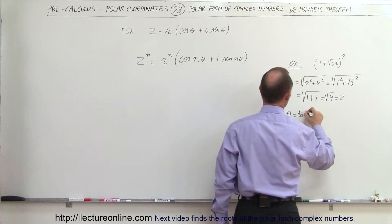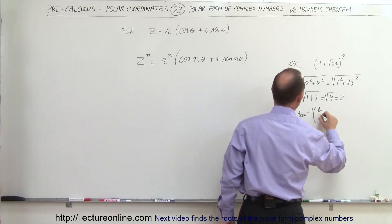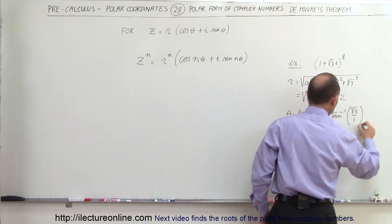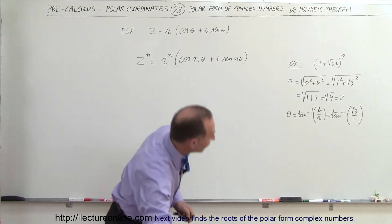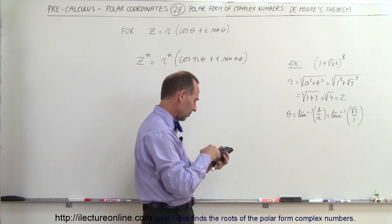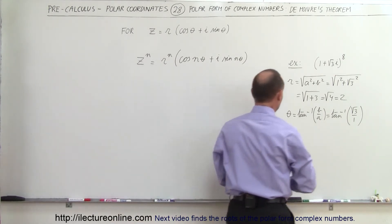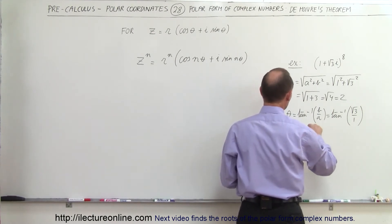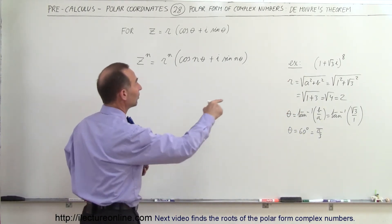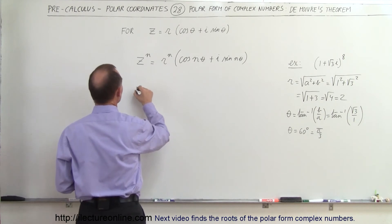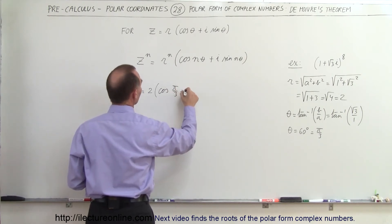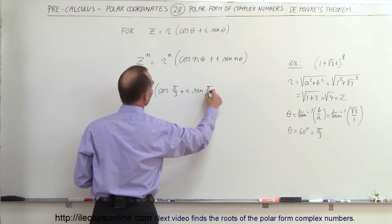What about the angle theta? Theta is equal to the arctangent of b over a, which is equal to the arctangent of the square root of 3 divided by 1. That is 60 degrees — let's check that: take the square root of 3 and take the arctangent of that, and sure enough, theta is equal to 60 degrees, which is equal to pi divided by 3. So we have z equal to 2 times the cosine of pi over 3, plus i times the sine of pi over 3.